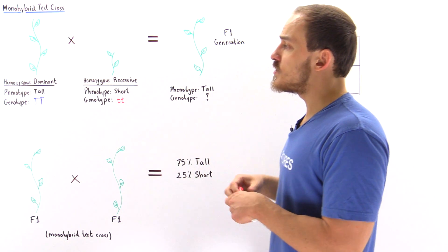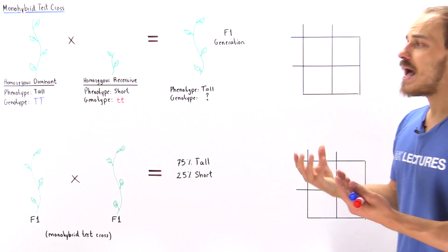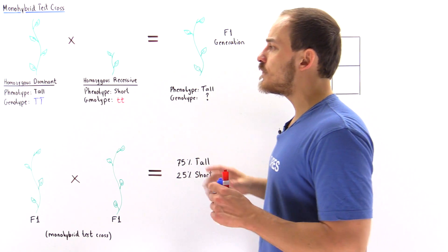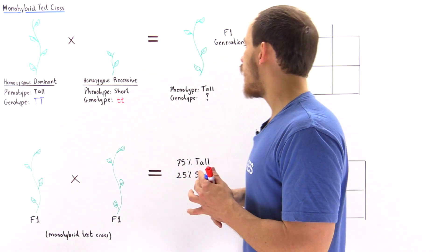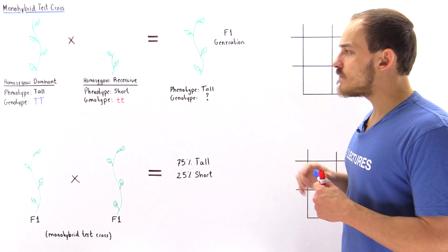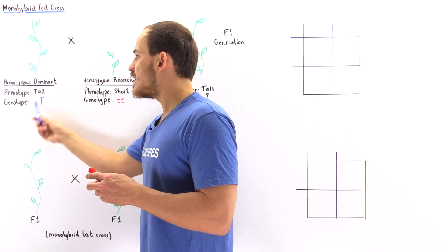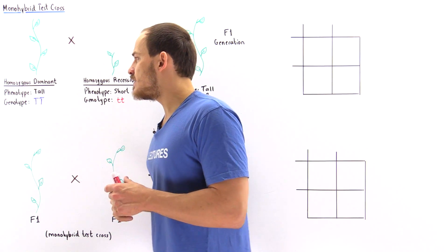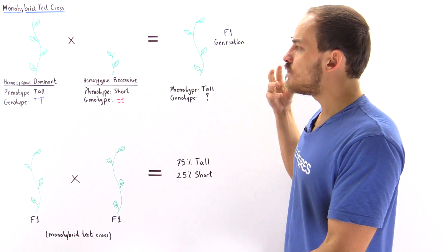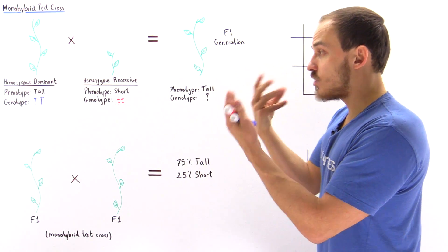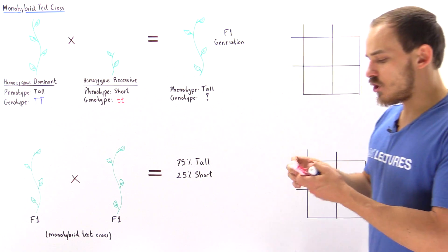Remember, the Punnett square is the tool we use in genetics that allows us to determine all the different potential possibilities for the genotype of a particular offspring. So we begin with the parent that has uppercase T, uppercase T, and the other parent has lowercase t, lowercase t, and they mix, they mate, they are crossed, and they produce a certain offspring.